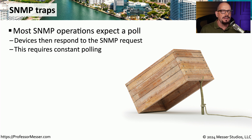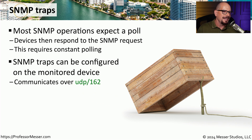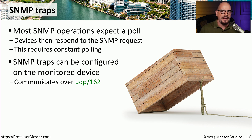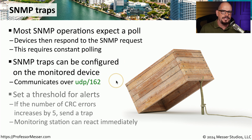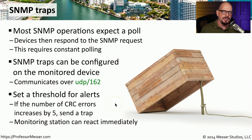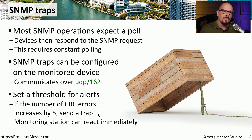For that reason, you may want to configure a different feature of SNMP referred to as an SNMP trap. You can think of this as a proactive alarm sent from the device to the management station without the management station needing to poll the device first. These SNMP traps use UDP port 162. For example, you could configure a switch or router to look for a certain number of CRC errors — if errors increase by five, that device will proactively send a trap message to your network management station, which can then alert people or run scripts to help resolve the issue.